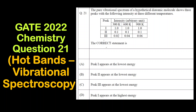The pure vibrational spectrum of a hypothetical diatomic molecule shows three peaks — peak 1, peak 2, and peak 3 — and their intensity values are given at different temperatures: 300 Kelvin, 600 Kelvin, and 900 Kelvin. The correct statement is to be identified from four given options.